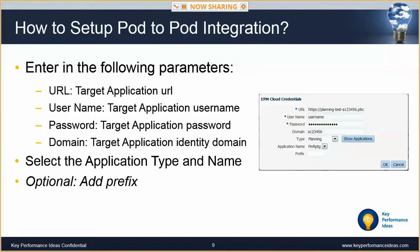Once you select to set up a new cloud target, you will get a pop-up box where you enter the information to connect to your target pod. The information you need is the target application URL, the target application username, the password for that user, and the target application identity domain. Once you've entered those four parameters, click the blue Show Applications button. At this point, the source will be connecting to the target.